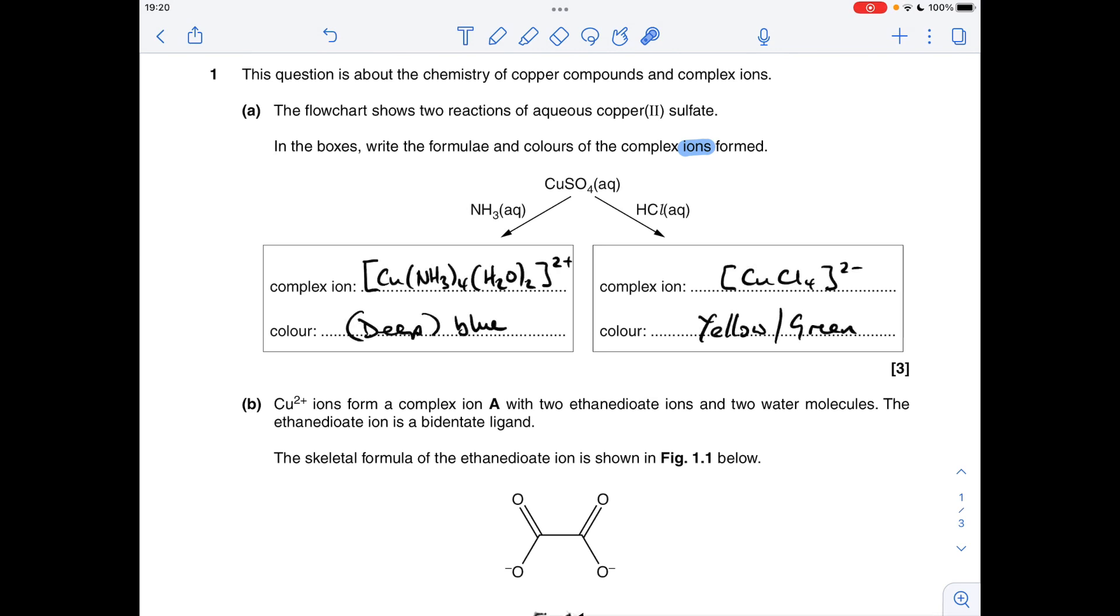So if you add aqueous ammonia to a solution of copper 2-sulfate, you would initially get a precipitate of copper 2-hydroxide, that's not a complex ion. So if you kept adding the aqueous ammonia, you would get this complex ion form, so that's what they're after, and that's a deep blue colour. You don't have to say deep, but it is deep blue.